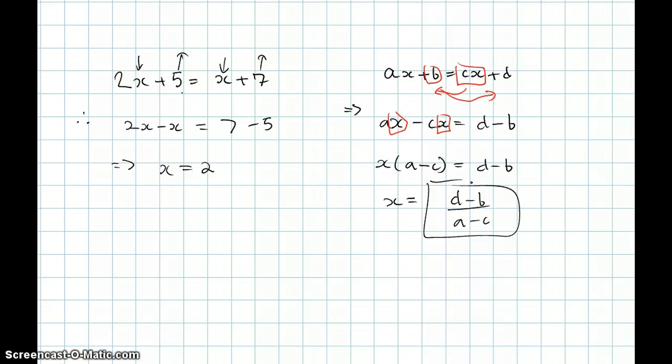So 2x plus 5 equals x plus 7. Let me just write it again. So over here we have this as d, this as c, except over here since there's no variable we just assume that it's 1, this as b, and lastly 2 as a.